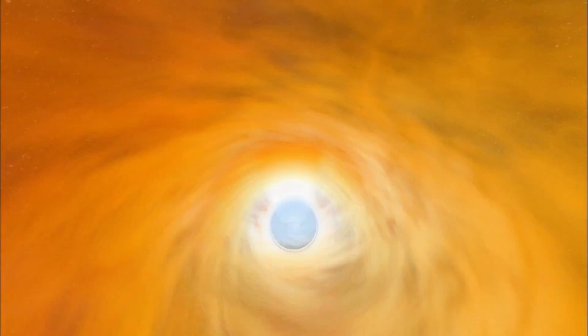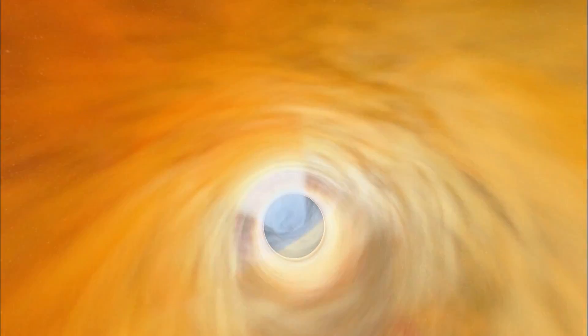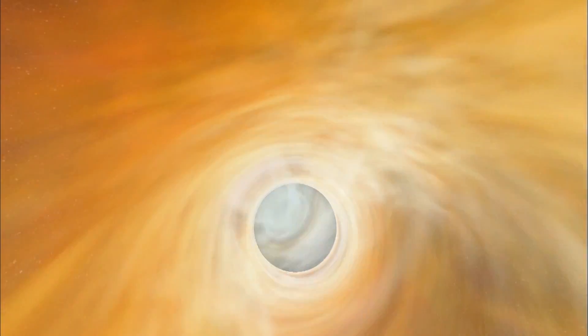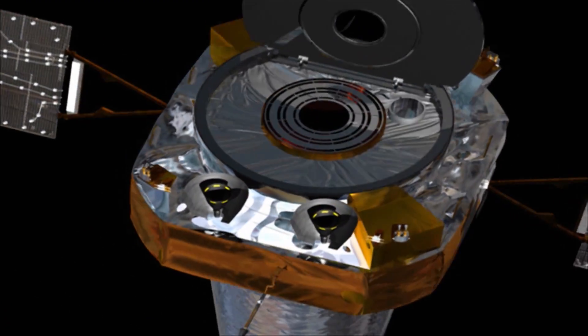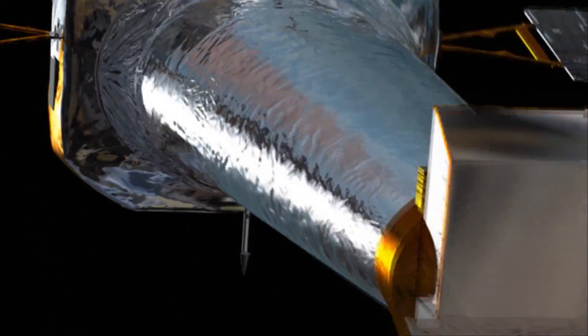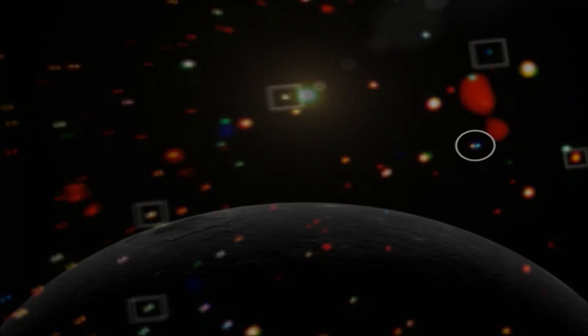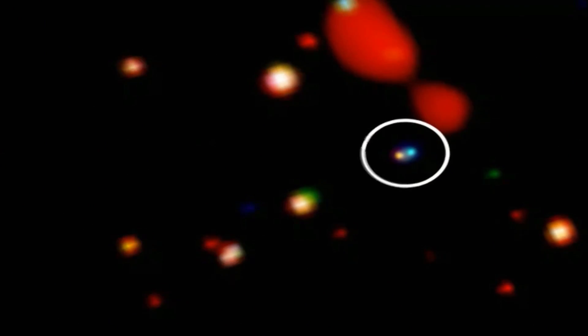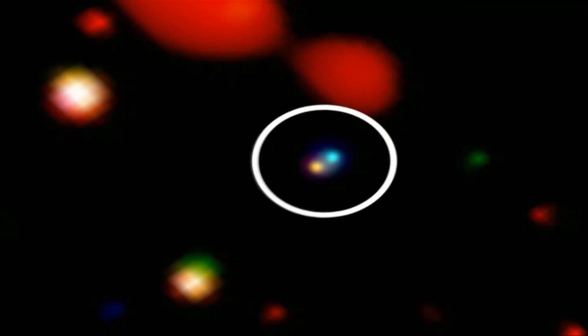From these stars likely came the first generation of black holes. The orbiting Chandra X-ray Observatory recently turned up evidence at the centers of galaxies back in the time of the early universe. These images show its remarkable find.